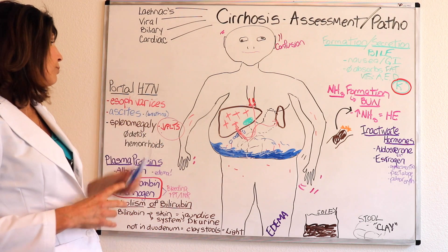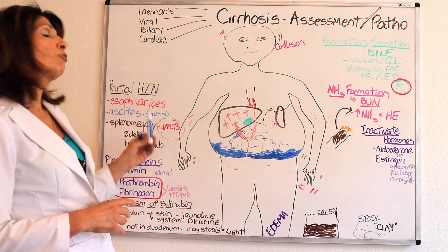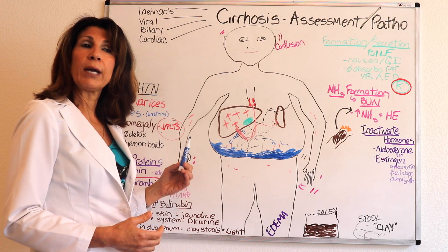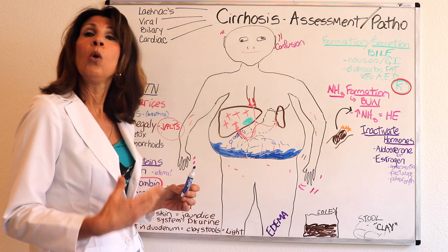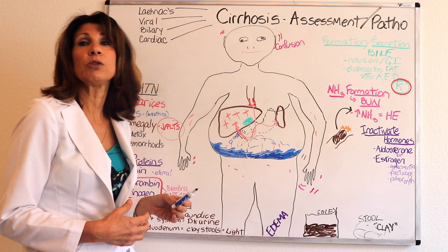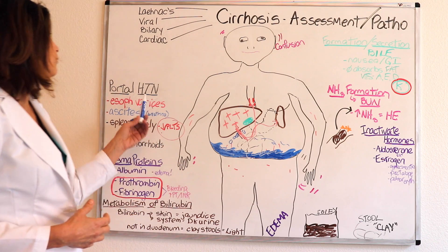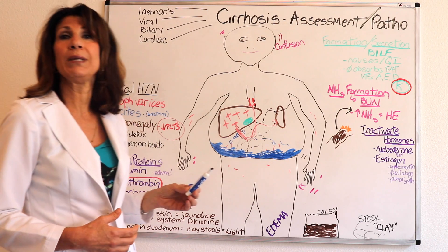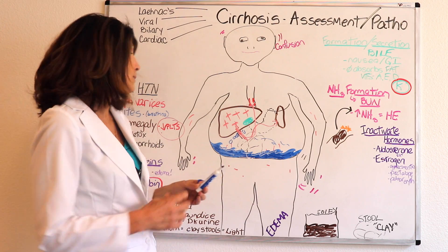Two of the three things that occur secondary to portal hypertension will cause patients to be admitted into acute care: the first is esophageal varices, and the second is ascites.